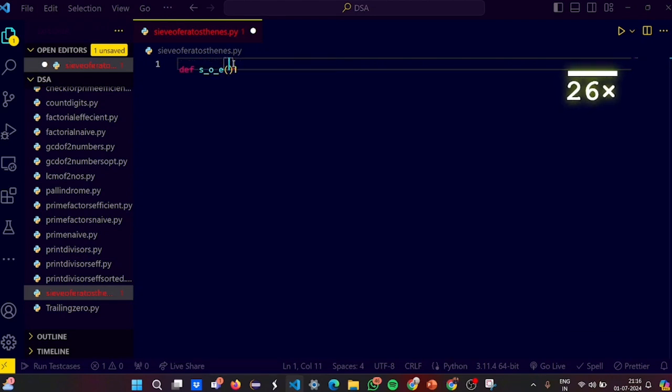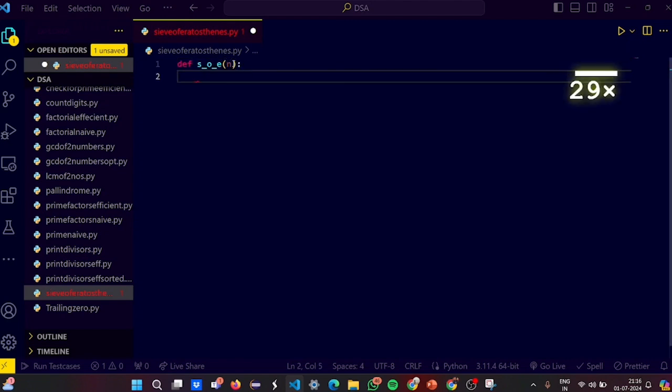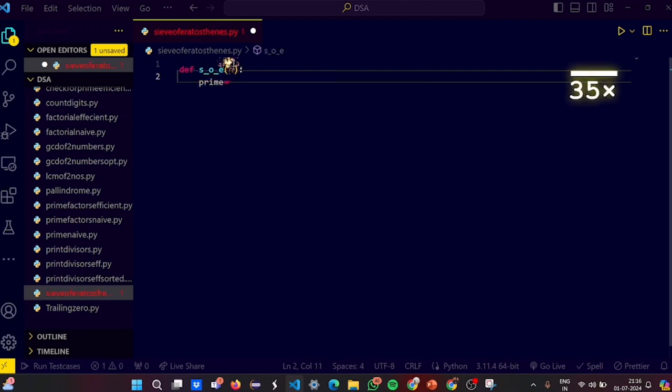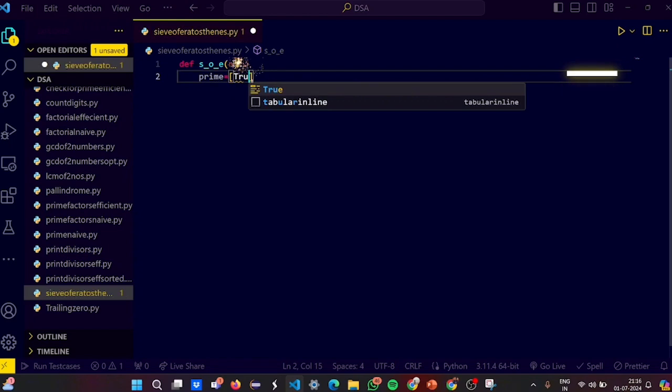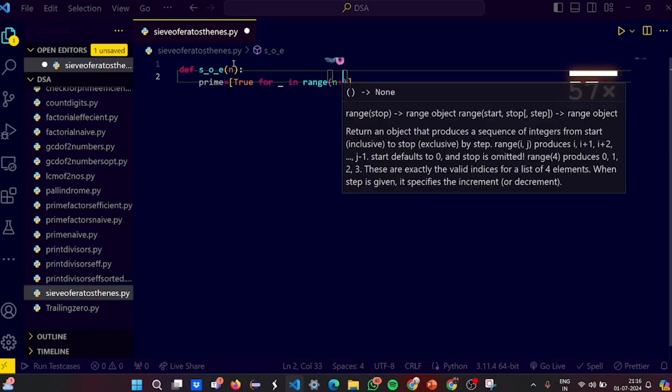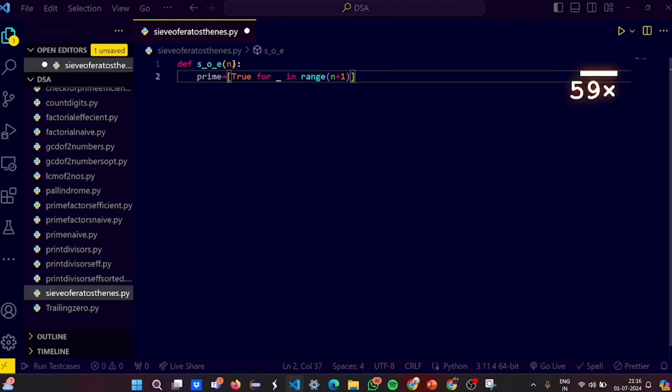The parameter is n. Then we have to create a boolean array. As I said, all the entries must be true. So let's create a boolean array. Prime equals, let's put the condition true for in range, all the entries must be true, n plus 1. Done. Let's move to the next line.